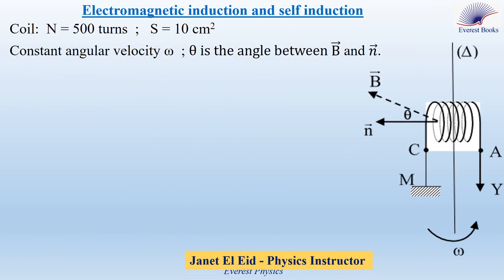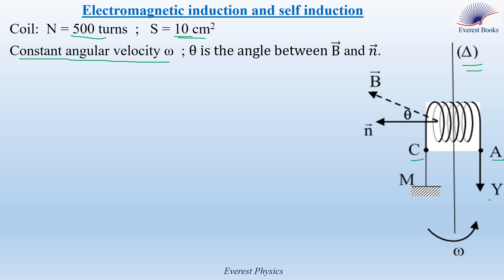A coil of horizontal axis is made up of 500 turns, each of surface area 10 cm squared. The coil is rotating at a constant angular velocity omega about a vertical axis delta. The normal to the planes of the turns of the coil is directed as indicated in the figure. The coil is rotating in a uniform, constant, and horizontal magnetic field B. The terminals A and C of the coil are connected to the input Y and the ground M of an oscilloscope. Theta is the angle between B and N.